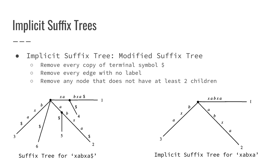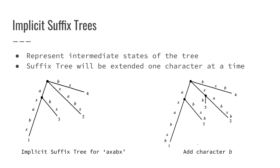Implicit suffix trees reverse the idea of having the termination character. On the left there's a suffix tree for XABXA with a termination character. What we do is remove every copy of the terminal symbol, remove every edge with no label, and remove any node that does not have at least two children — as a way to compress some of the paths. This implicit suffix tree for XABXA, seen on the right, is what we'll be looking at more often in Ukonen's algorithm.